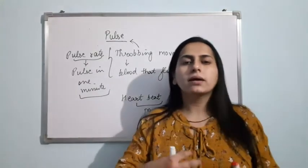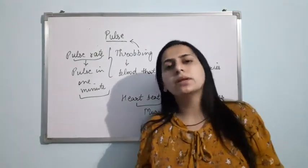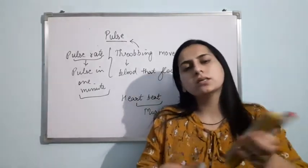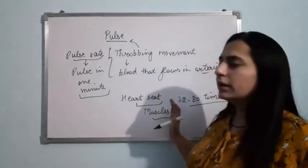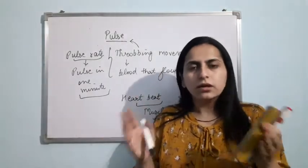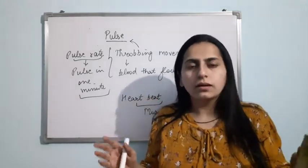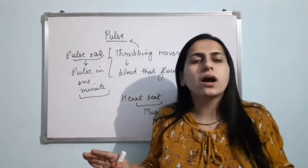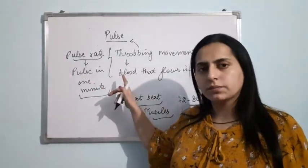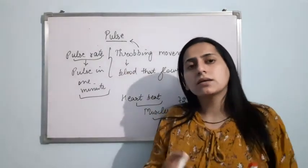Because if your heart beats one time, you can feel one pulse here; a second beat gives a second pulse. In the same way, if your heart is beating for one minute and you are counting the pulse for one minute, that is the same. The heart beats due to the presence of muscles, which cause contraction and relaxation. That contraction and relaxation constitutes a heartbeat, which causes blood to flow in the arteries, and you can feel that throbbing movement — that is pulse.